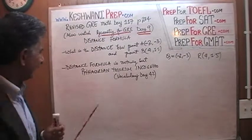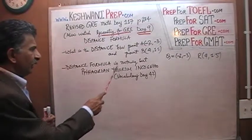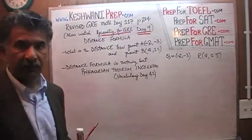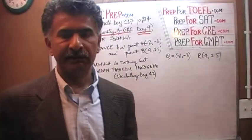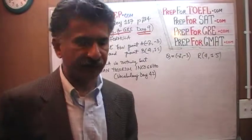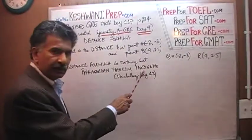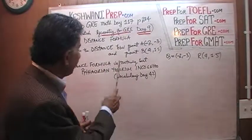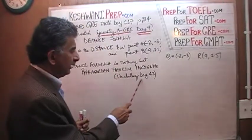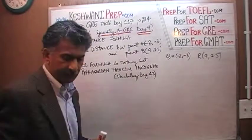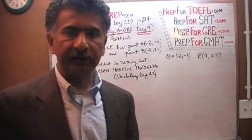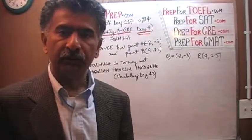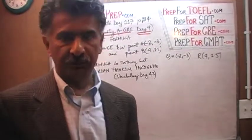A distance formula is nothing but an application of the Pythagorean theorem — it is Pythagorean theorem in disguise, nothing more than that. If you do not know the word incognito and you're interested in improving your vocabulary, just type in my name Keshwani and vocabulary Day 42. You will learn the word incognito, meaning 'in disguise,' along with other words to help improve your score in the English portion of the GRE.